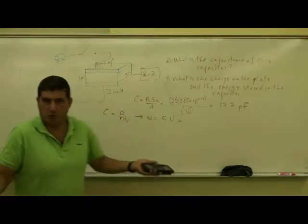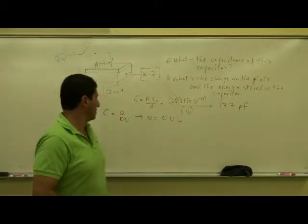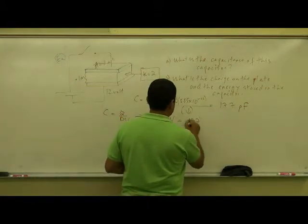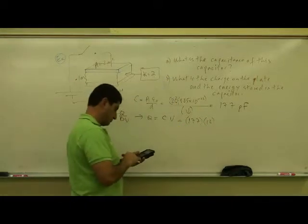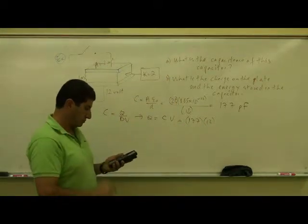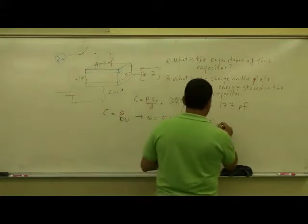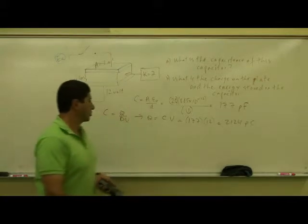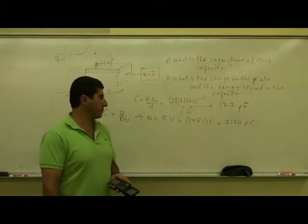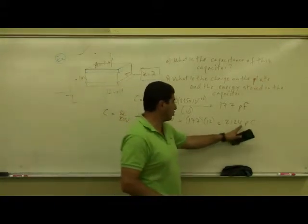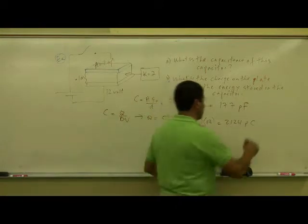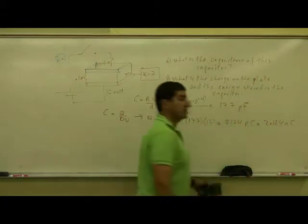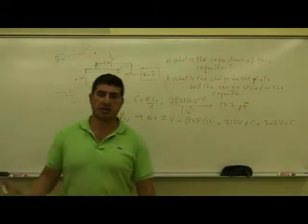A lot of times instead of delta V, we will just write V. So you're going to have 177 times 12. So you're going to have 2,124 picocoulombs. So the charge is going to be 2,124 picocoulombs. Or you can say 2.124 nanocoulombs is how much charge is stored in the capacitor.